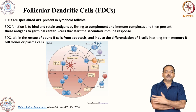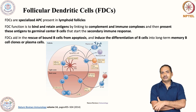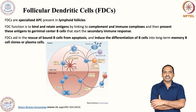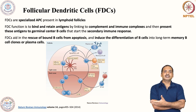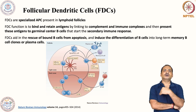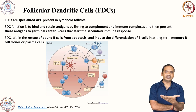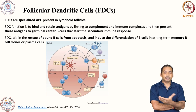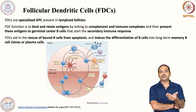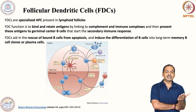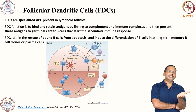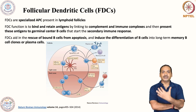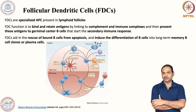In this session, I covered dendritic cells, plasmacytoid dendritic cells, and follicular dendritic cells. To summarize: DCs play a very important role in both innate and adaptive immune responses; PDCs play a very important role in antiviral as well as anti-tumor immunity; and FDCs play a very important role in B cell development, maintenance, and maturation. Thank you.